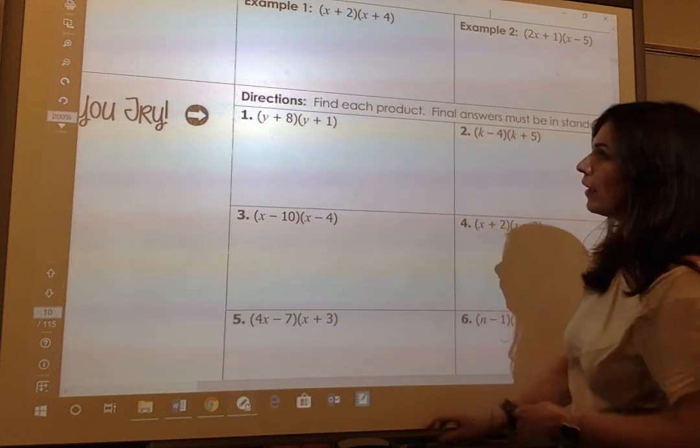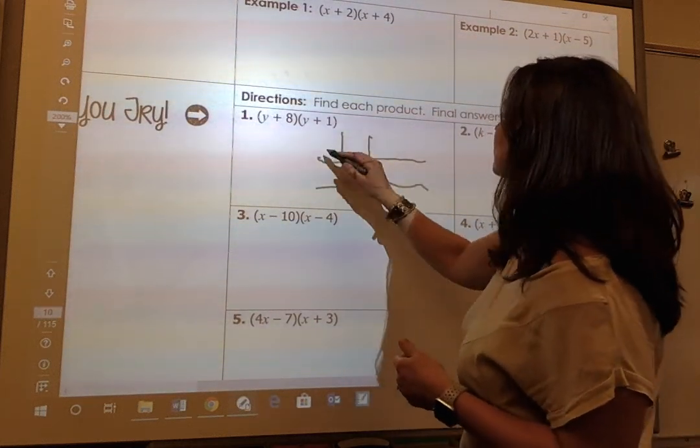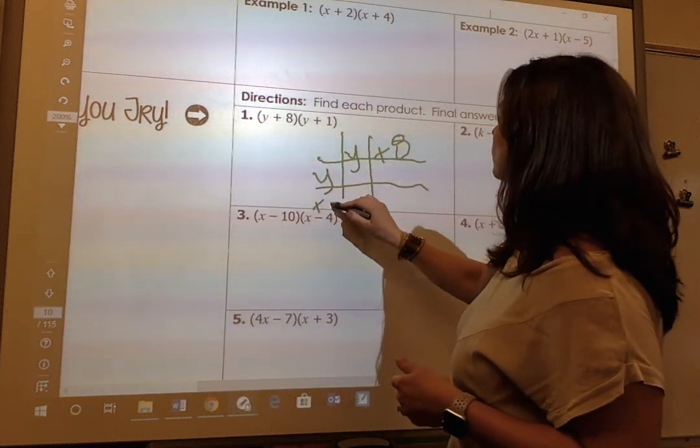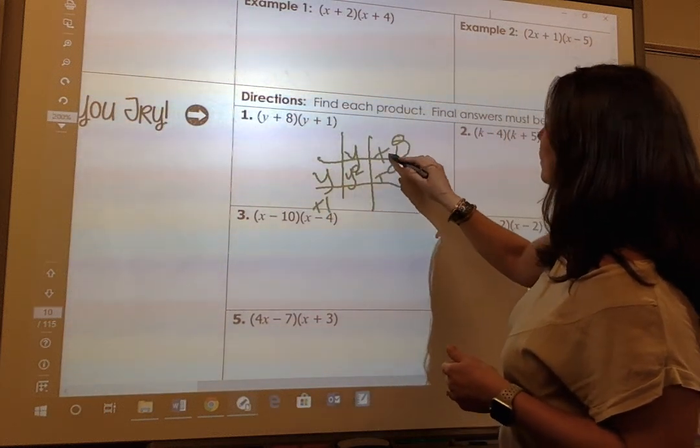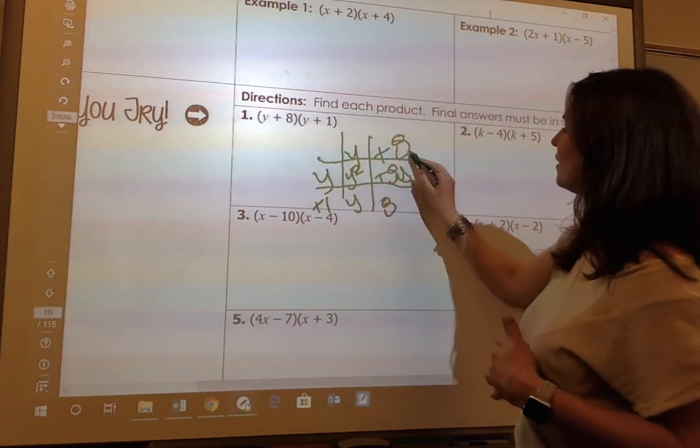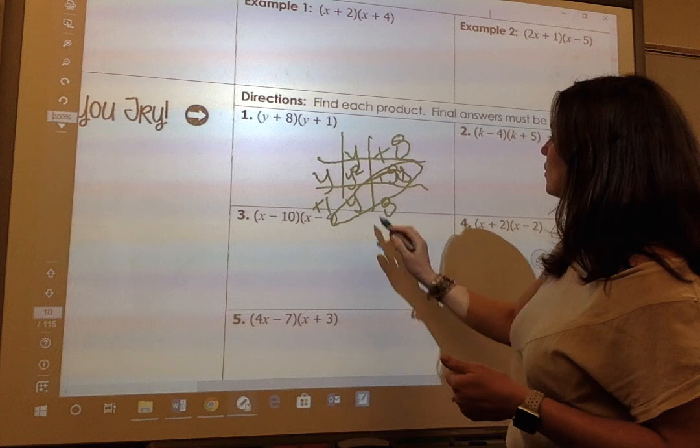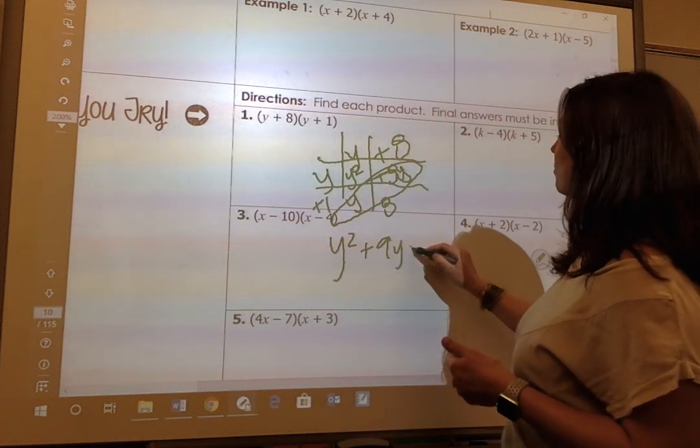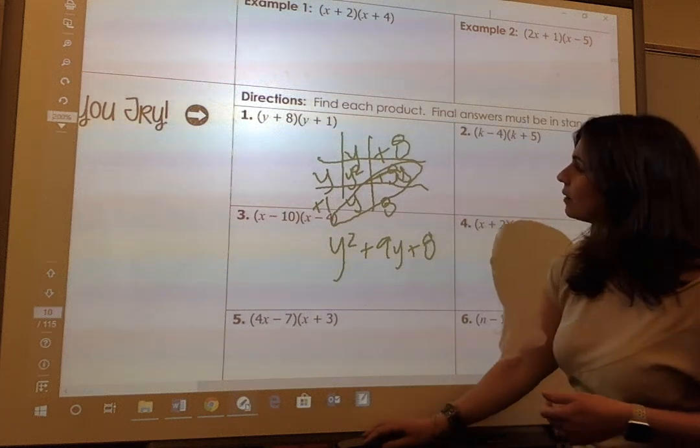And you can fill out your notes. So we're going to start with number 1. I'm going to make a tic-tac-toe. And I get y plus 8 and y plus 1. To get y squared plus 8y, y and then 8. So I'm left with y squared plus 9y plus 8.